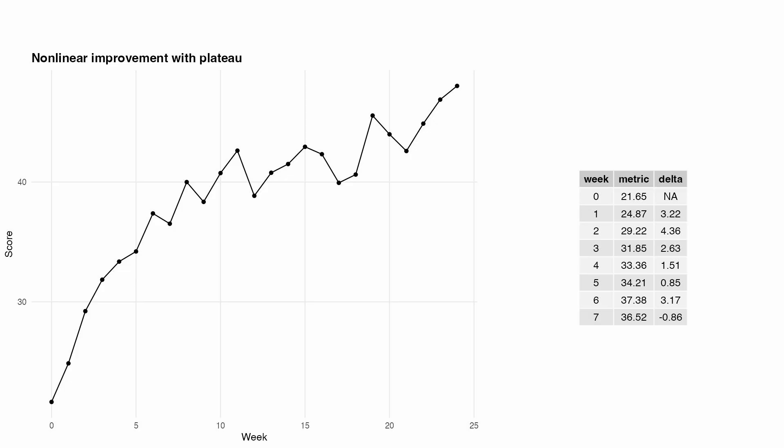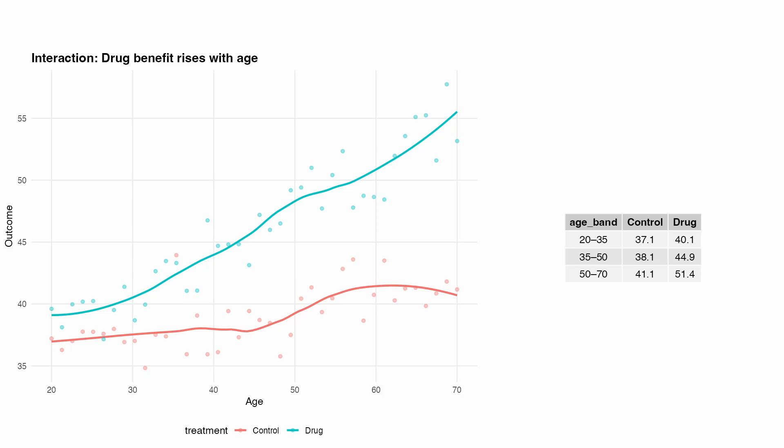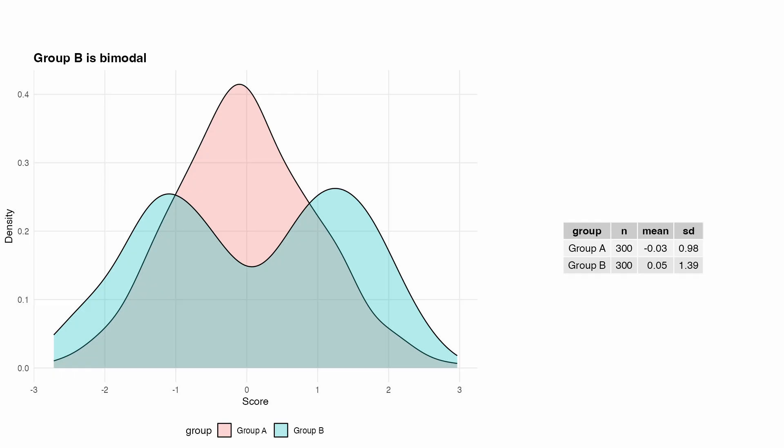Let's look at some examples. Here's the same data plotted versus in a table — it's much better to see it in a plot because it's communicating information about a trend; we care about the shape, which is very hard to glean from a table. Here's another one: you're trying to show evidence of an interaction effect. If you just looked at the table it would be very hard to tell, but when you plot it, it's super easy to see. If it's easy for you to see, it'll be easy for your audience.